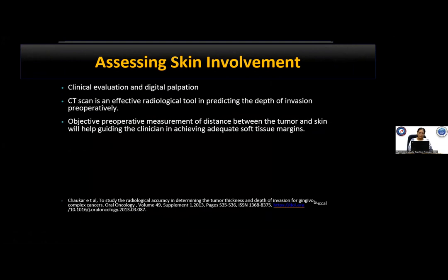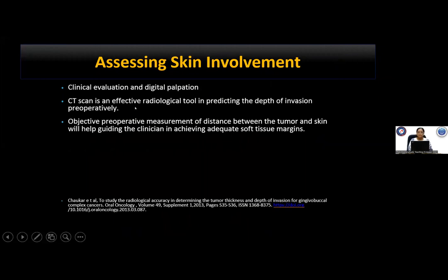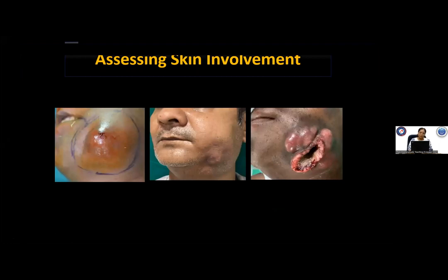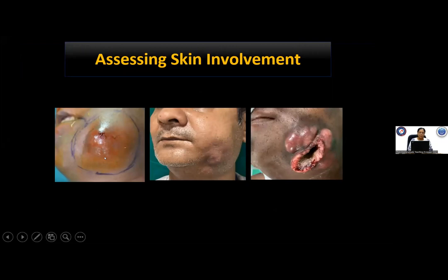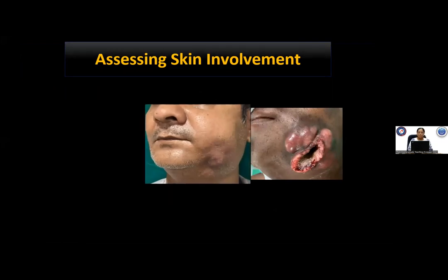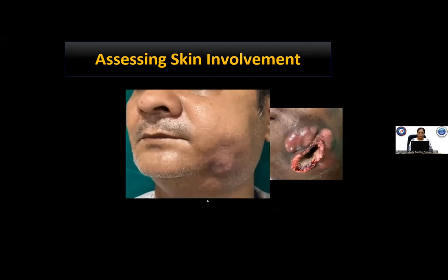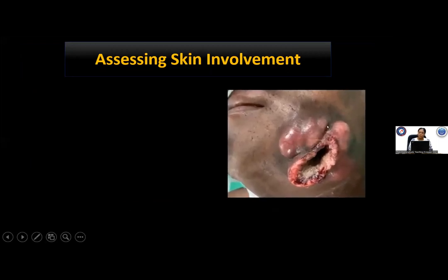For assessing skin involvement, careful inspection and digital palpation is the way to go. A study by Dr. Chalkar et al. has shown that CT scan is effective in predicting depth of invasion preoperatively, and objective preoperative measurement of distance between the tumor and skin can help achieve adequate soft tissue margins. Skin involvement can appear as a peau d'orange appearance, tethered skin with loss of hair follicles, impending ulceration, or frank ulceration.